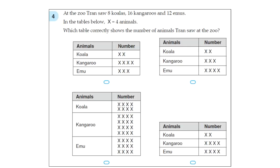Next question. At the zoo, Tran saw 8 koalas, 16 kangaroos and 12 emus. In the tables below, X represents 4 animals. Which table correctly shows the number of animals Tran saw at the zoo? So this is the important part here: 1X represents 4 animals.